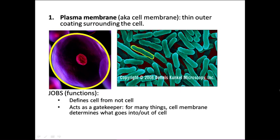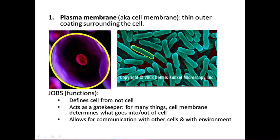The plasma membrane also acts as a gatekeeper and decides what goes into the cell and what goes out. This is a really important job because if too much of something goes into the cell — say salts — or too much goes out — say water — that can be lethal for the cell. It also allows for communication with other cells and with the environment through proteins on the plasma membrane, both for unicellular organisms sensing their environment and for cells in multicellular organisms cooperating across tissues.